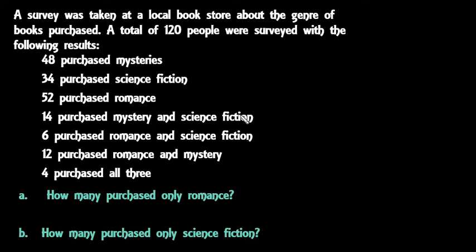For this video we're going to do another application of Venn diagrams, but this time we have three different sets. The situation we have is a survey was taken at a local bookstore about the genre of books purchased. A total of 120 people were surveyed with the following results.